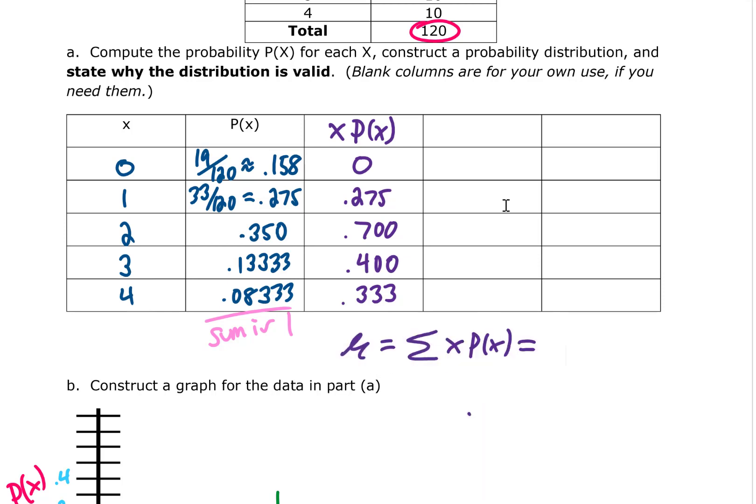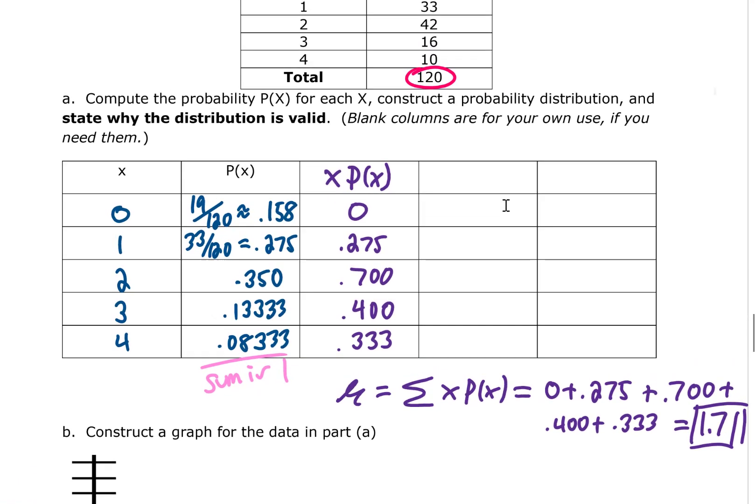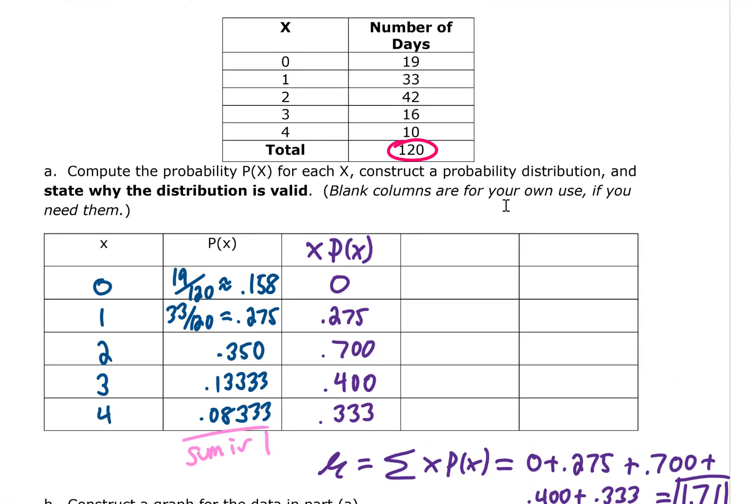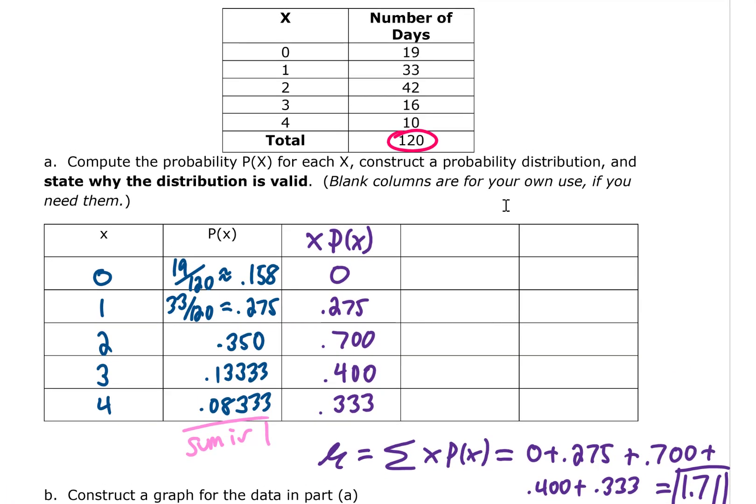The expected value or the mean of this probability distribution is the sum of this purple row here. I'm getting a mean or an expected value of 1.71. Relating this back to the original problem, on any given day we expect there to be on average 1.7 accidents at this water park.